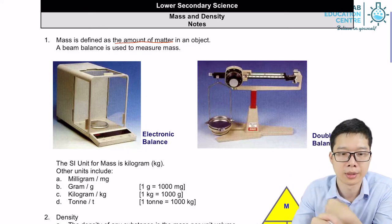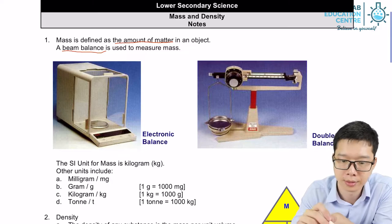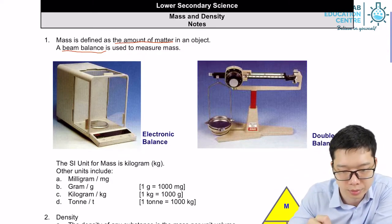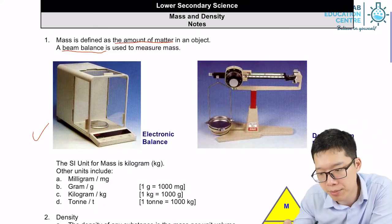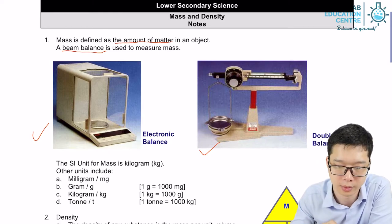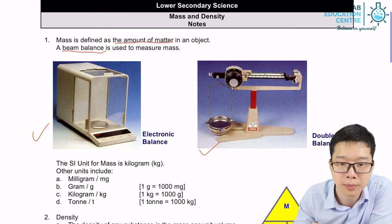And we can use either a beam balance or electronic balance to measure the mass. So an electronic balance maybe look like this. A beam balance, this is a double beam, maybe look like this. So they are used to measure the mass.